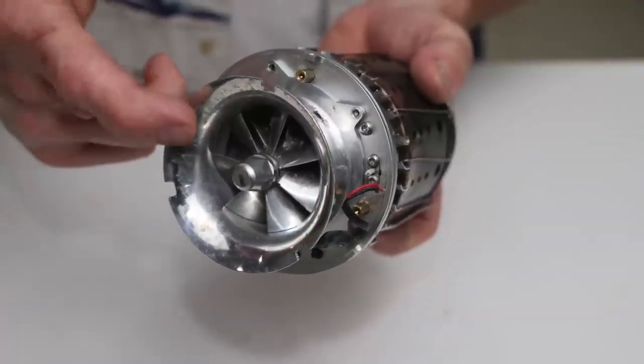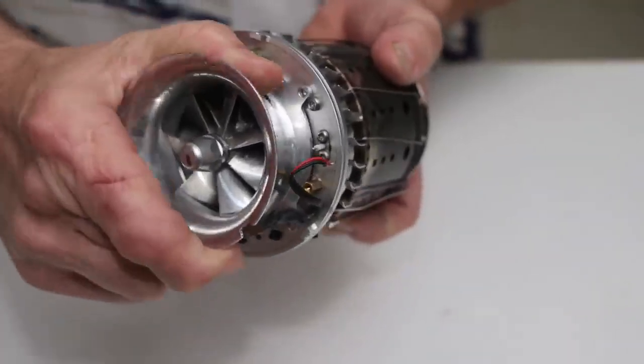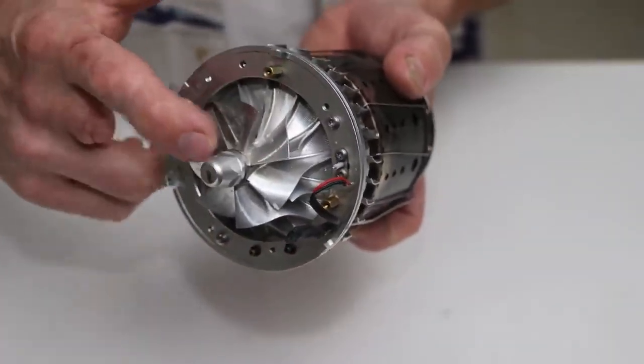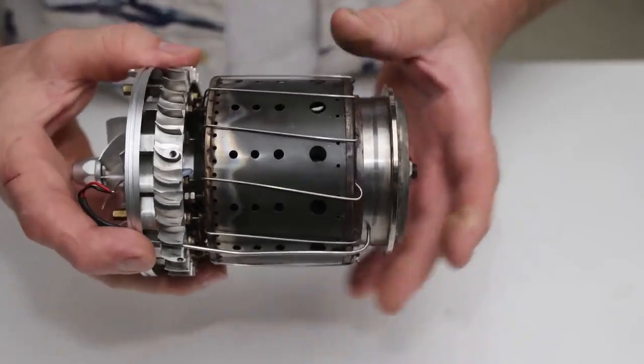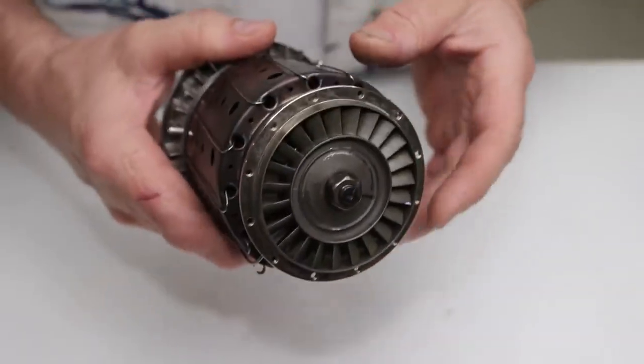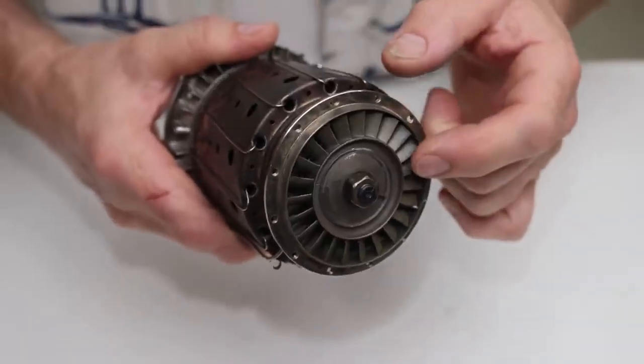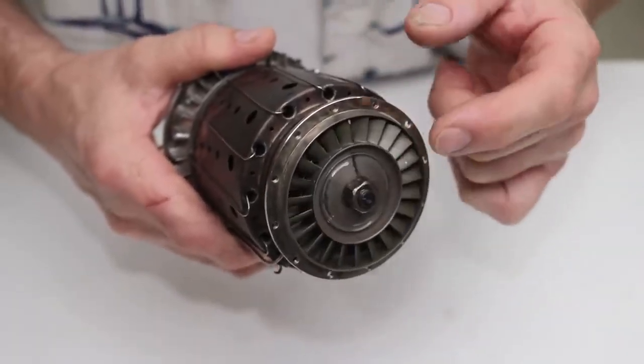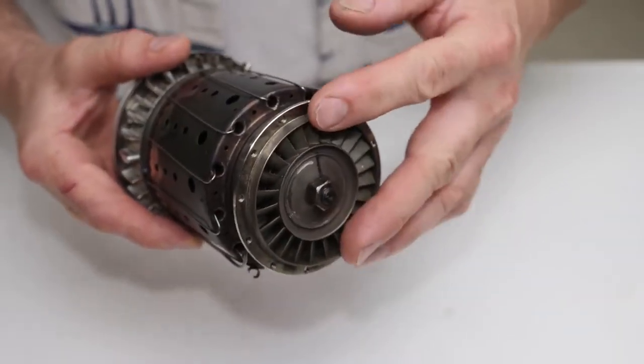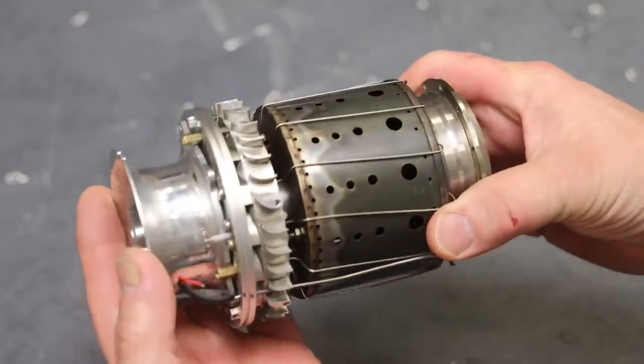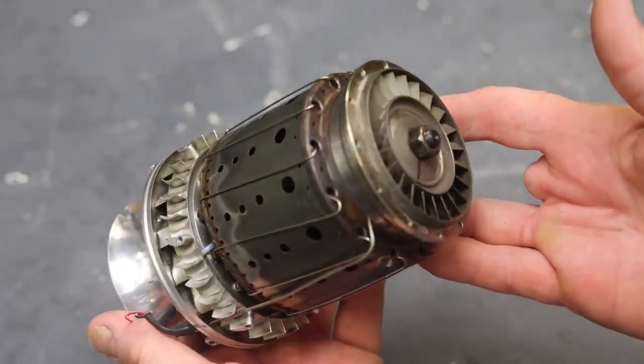The air enters the intake here, gets compressed by the compressor. That compressed air moves through the stator into the combustor where it gets mixed with fuel, gets ignited, creating heat and expanding gases which come out the back of the engine, push the turbine wheel powering the compressor to complete the cycle, as well as producing thrust. Now that you have a better idea for how these jet engines work, I'm going to finish putting this together.